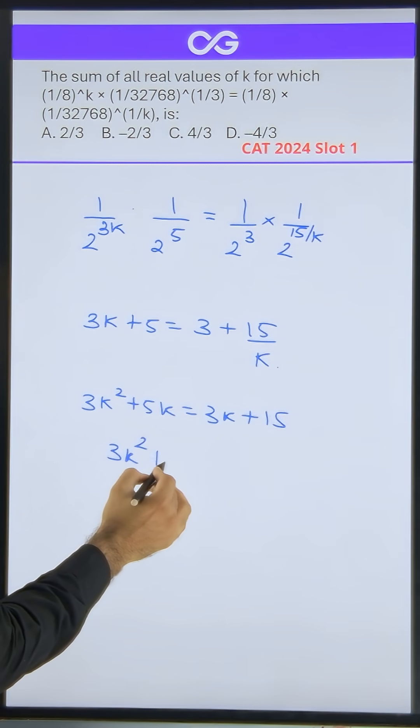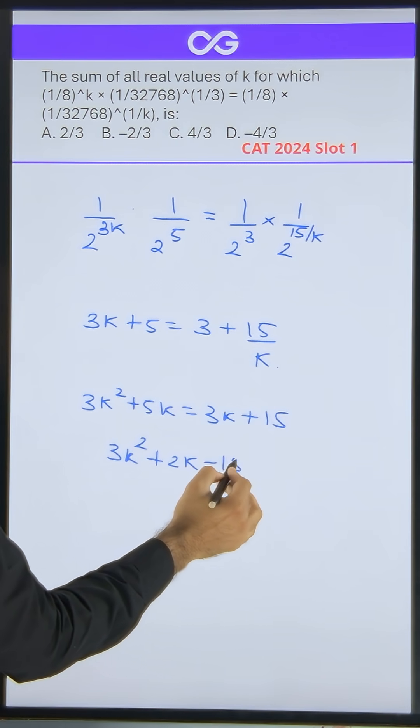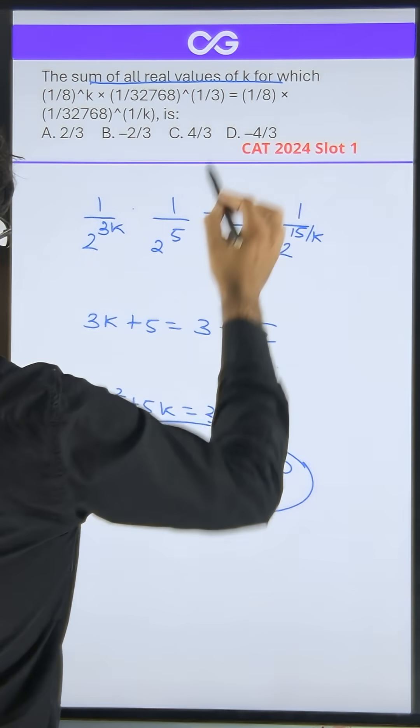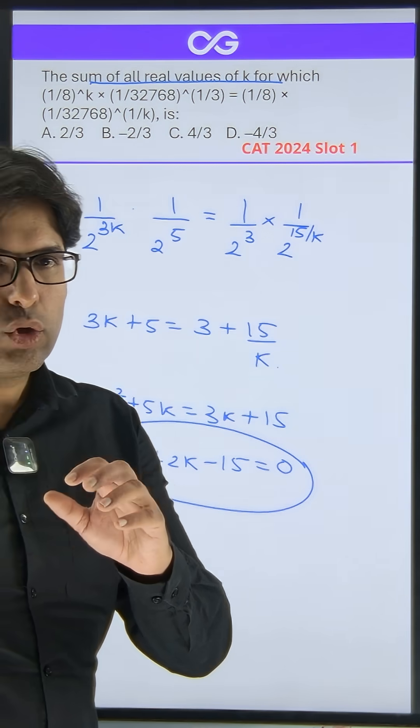You will get 3k squared plus 5k is equal to 3k plus 15. If you simplify it, you will get a quadratic: 3k squared plus 2k minus 15 is equal to 0. Now you can solve this quadratic, but this is not what they are asking.